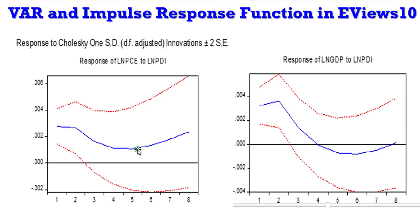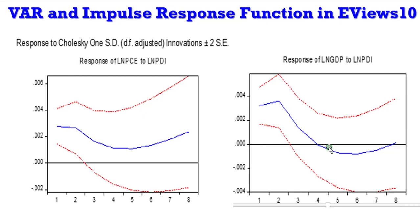From period 5 upwards, PCE gradually increases. So that is the response of PCE to PDI. Looking at the response of GDP to a one standard deviation shock to PDI: at the earlier stages there is an increase in GDP. Afterwards, between period 2 and period 4, there is a sharp decline in GDP. It rests at a stable state in period 4, then becomes negative — below the zero line — between period 5 and period 6.